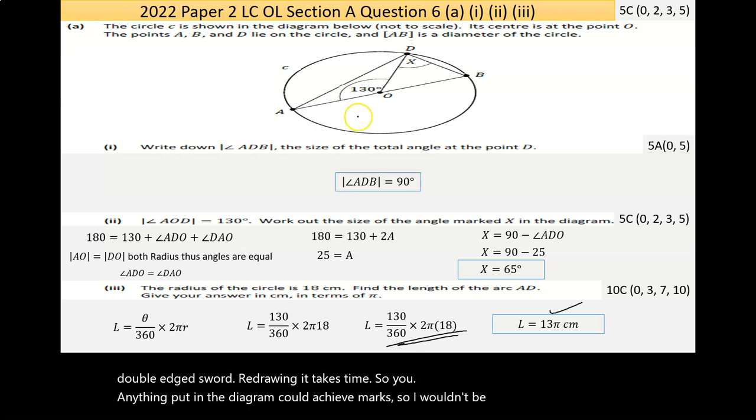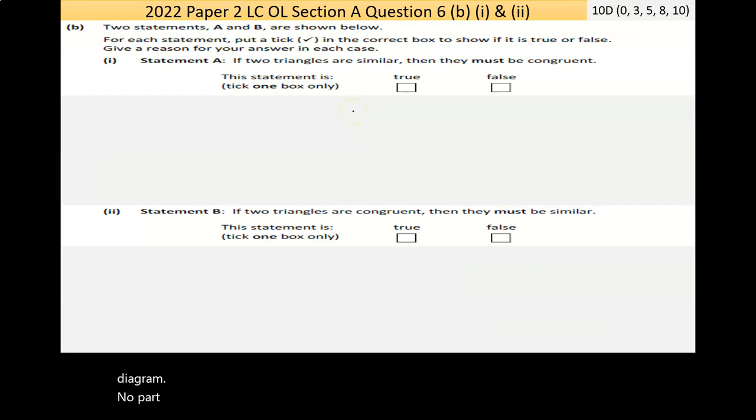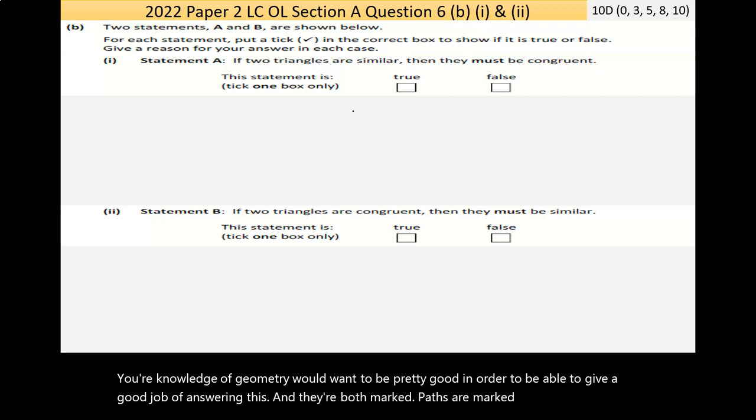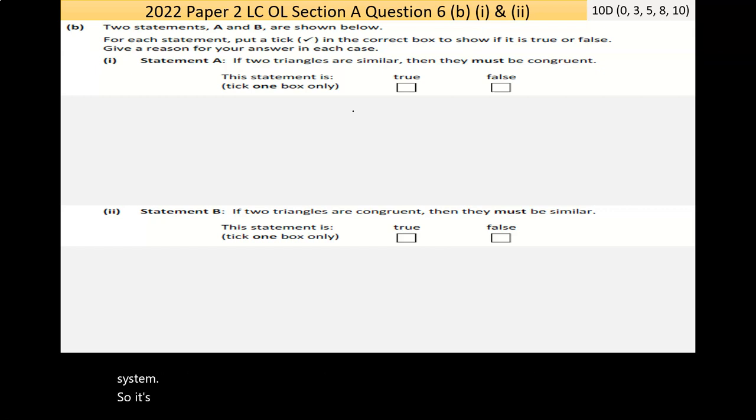Part B is kind of a weird question - your knowledge of geometry needs to be pretty good to answer this well. Both parts are marked with the same grading system. Two statements A and B are shown - for each, put a tick to show if it's true or false and give a reason.